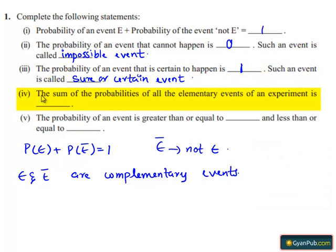Coming to the fourth bit, the sum of the probabilities of all the elementary events of an experiment is 1. An event having only one outcome is called an elementary event.